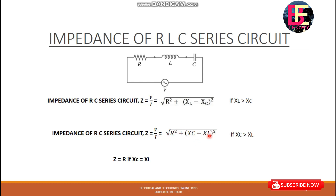If XL minus XC equals zero, then Z equals the root of R squared, which equals R. So the impedance will be equal to resistance only. The XC and XL are equal — this is the resonance condition — and the total impedance equals R.